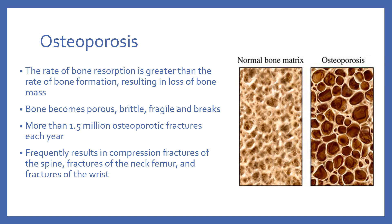Osteoporosis is the most prevalent bone disease in the world, causing more than 1.5 million fractures each year. The most common bones to fracture are the spine, where the vertebrae actually compress, the neck of the femur, and the wrist. In addition to fractures, osteoporosis can cause height loss, with an average of 2 to 3 inches due to bone loss.